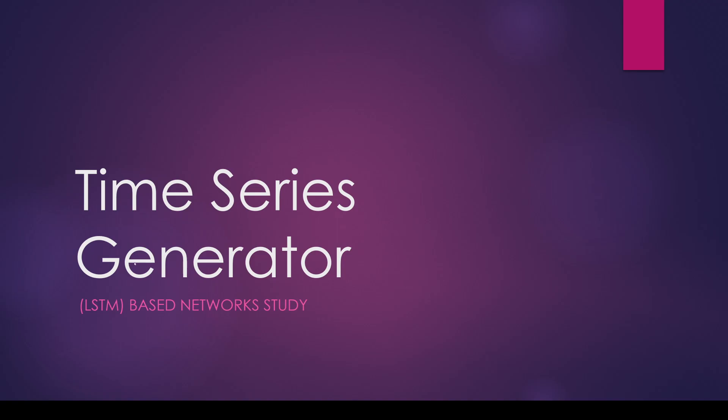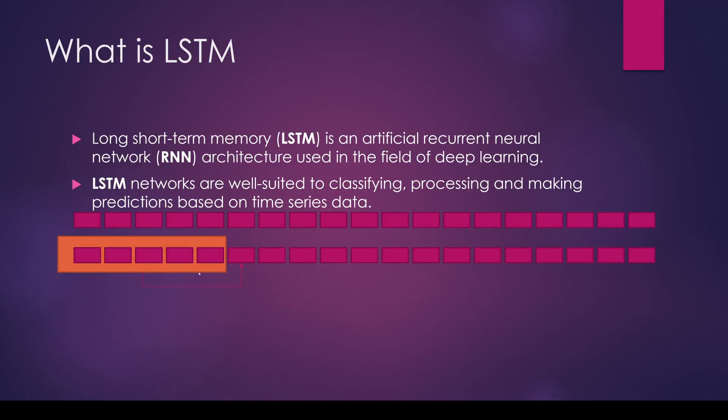We're going to be looking at time series generators. Long short-term memory is an artificial recurrent neural network and it's part of deep learning. LSTM networks are suited for classifying, processing, and making predictions based on time series data. Given a bunch of words, you can predict the next word or the sentiment. Like if you're looking at reviews, you might take the first n-words and classify whether the review is good or bad based on a sequence of words.